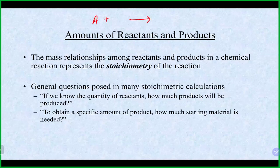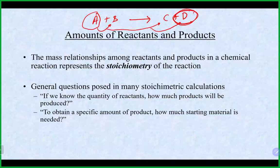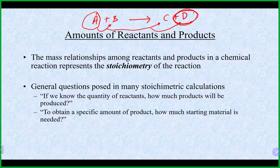When we talk about stoichiometry problems, we can figure out a lot of things in these equations. If we had an equation and we knew something about A, we could figure out how much B we would also need, how much C and D we would produce. And if we knew how much we produced of D, we could also figure out how much of C, B, and A we would start with.